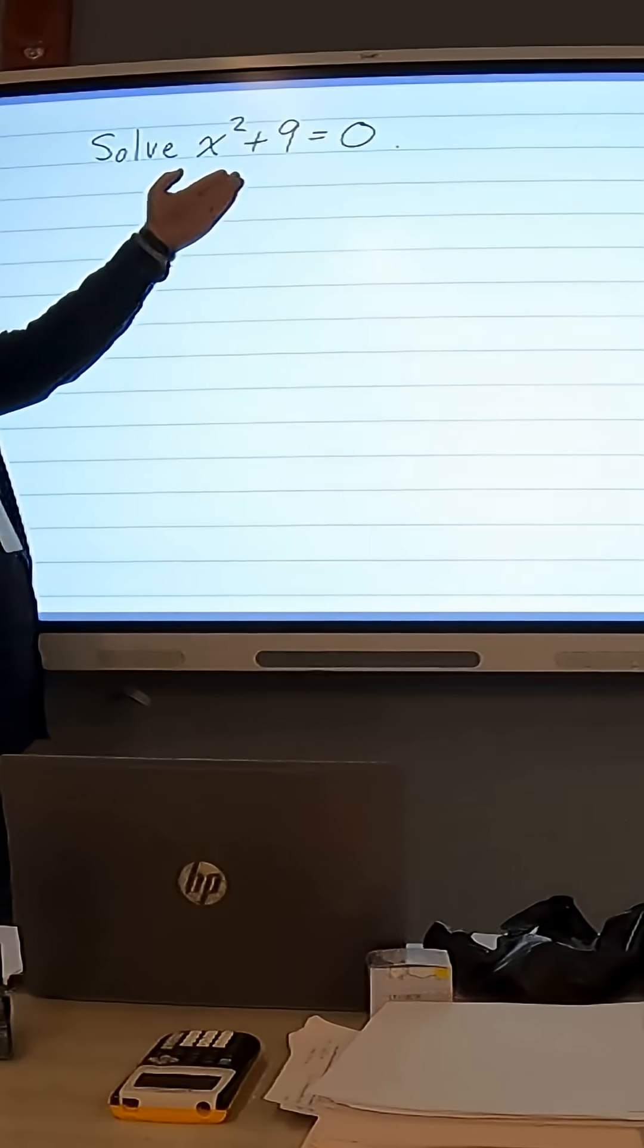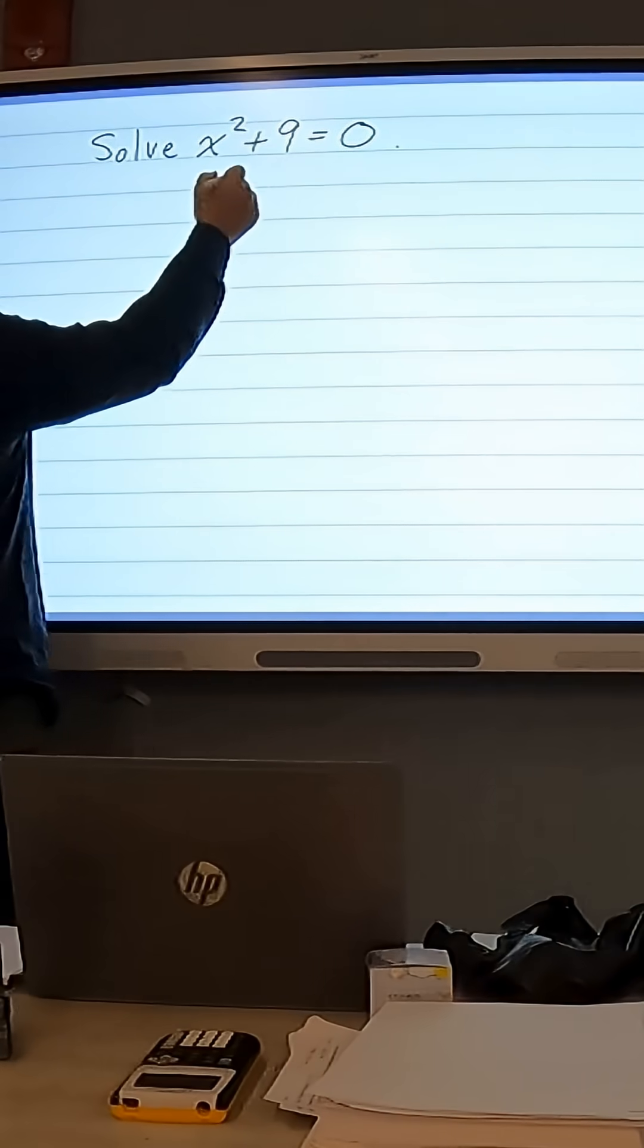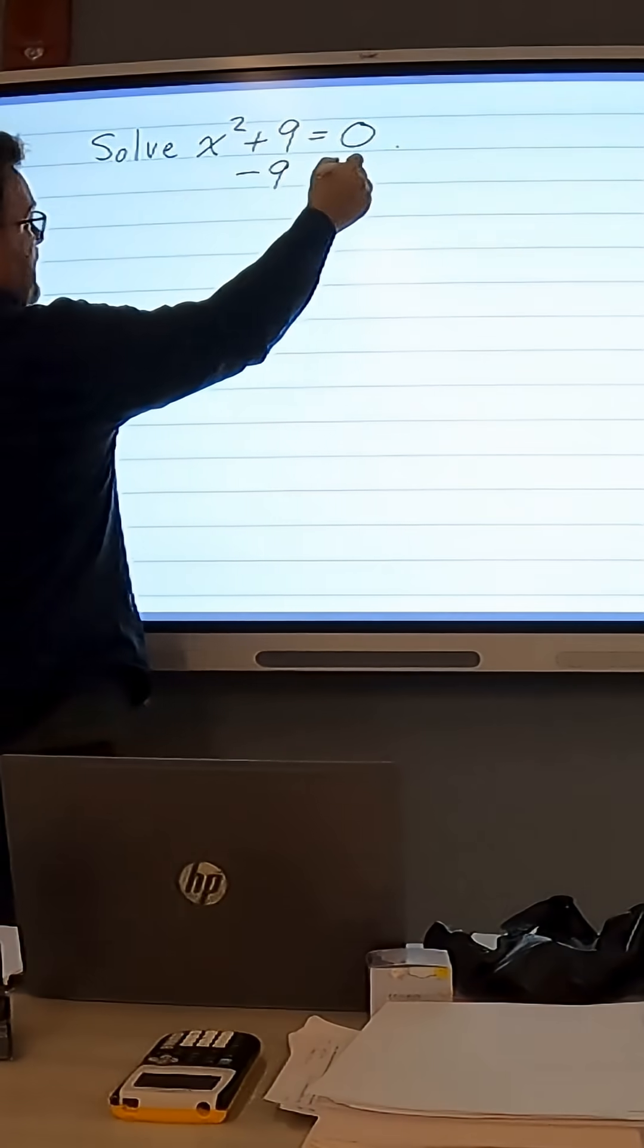Alright, in this next problem we're going to solve x squared plus 9 equals 0. First we want to get x squared by itself, so I'm going to subtract 9 from both sides.